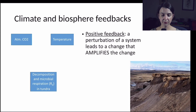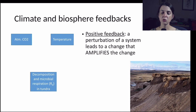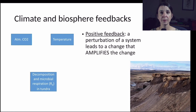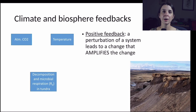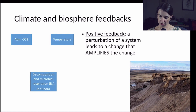We also have positive feedbacks, which occur when a perturbation of a system leads to a change that ends up amplifying that initial perturbation — it actually makes the size of that initial perturbation even greater. Now in the tundra, there is the troubling possibility of quite a large positive feedback to occur with climate change as a result of changes in decomposition.